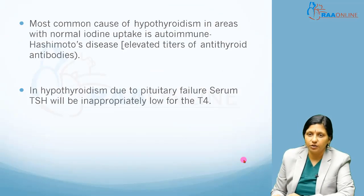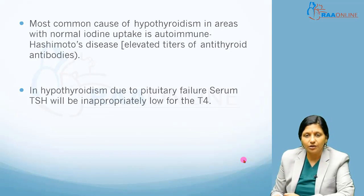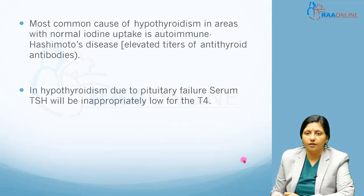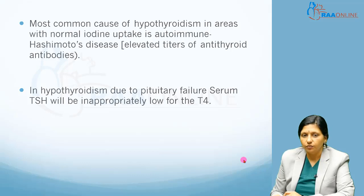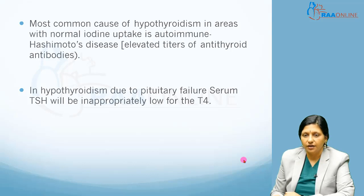The most common cause of hypothyroidism in areas with normal iodine uptake is autoimmune Hashimoto's disease, with elevated titers of antithyroid antibodies. In hypothyroidism due to pituitary failure, serum TSH will be inappropriately low for T4. To identify whether it is pituitary failure or Hashimoto's thyroiditis, we must check T4 and TSH levels. If there is pituitary failure, both T4 and TSH will be low, so total T3, total T4, and TSH must all be measured.